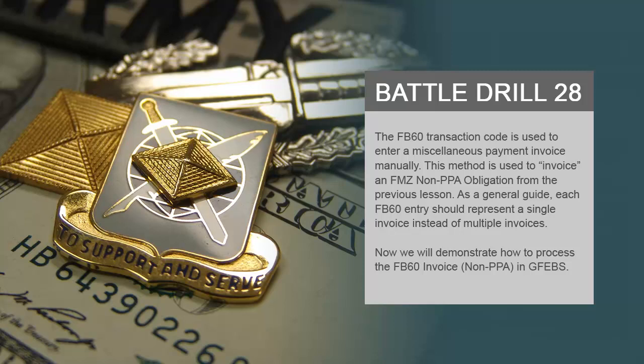The FB60 transaction code is used to enter a miscellaneous payment invoice manually. This method is used to invoice a FMZ non-PPA obligation from the previous lesson. As a general guide, each FB60 entry should represent a single invoice instead of multiple invoices. Now we will demonstrate how to process the FB60 invoice in GFIBS.